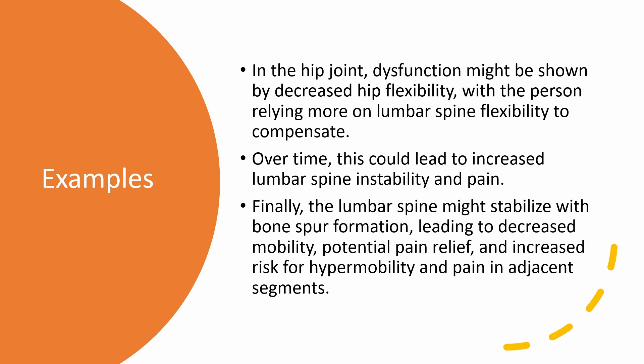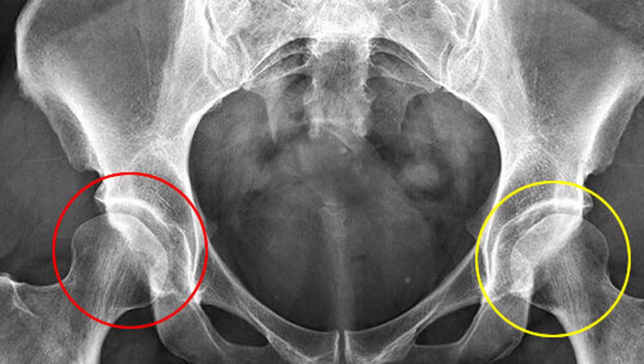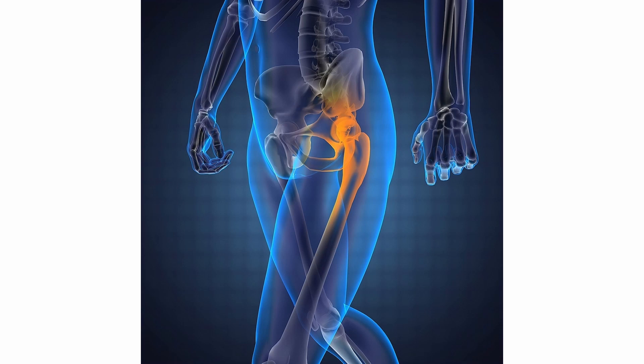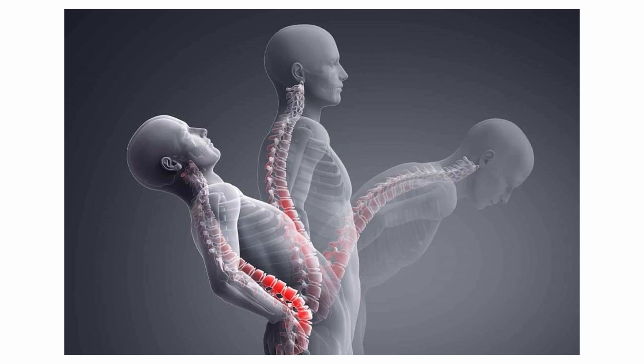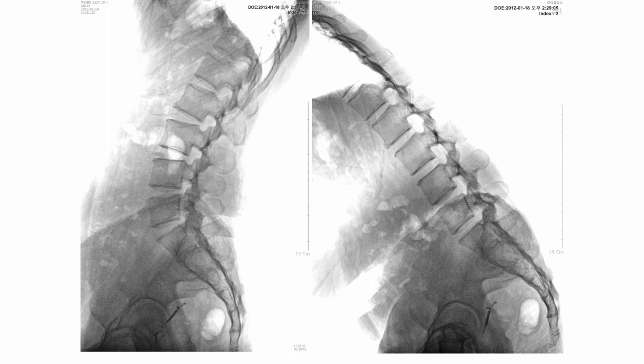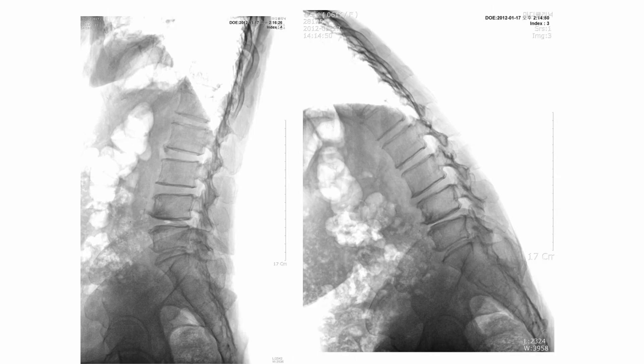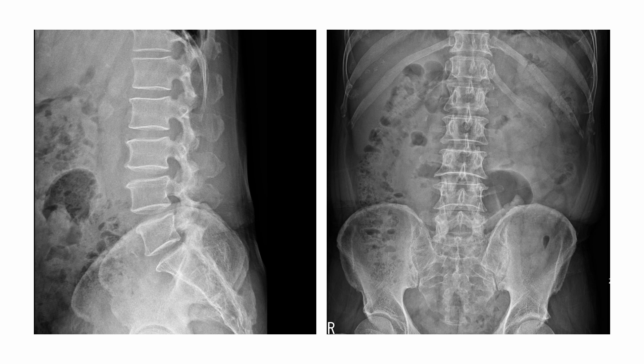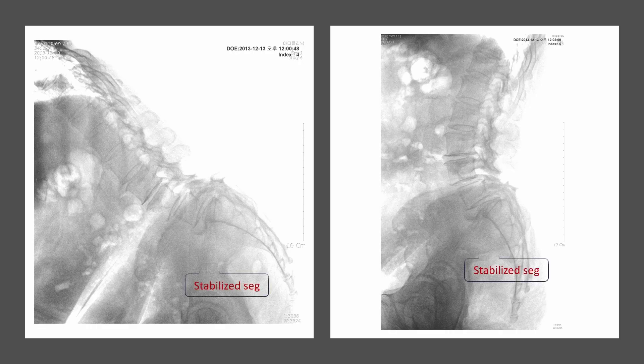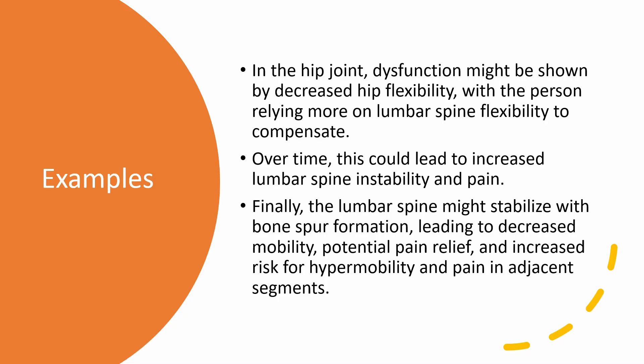To illustrate the three phases and the relative flexibility principle, consider the hip joint. In the dysfunction phase, decreased hip flexibility may be observed, leading an individual to depend more on the flexibility of the lumbar spine for compensation. This compensatory action, over time, could escalate into increased instability and pain in the lumbar spine, marking the transition to the instability phase. Eventually, in the stabilization phase, the lumbar spine might adapt through the formation of bone spurs, leading to reduced mobility. Although this might potentially alleviate pain, it simultaneously escalates the risk of hypermobility and discomfort in adjacent segments. In summary, the unstable lumbar segment might be stabilized with bone spur formation, leading to decreased mobility and potential pain relief, but increased risk for hypermobility and pain in adjacent segments if the patient continues to seek the same range of motion or activity.